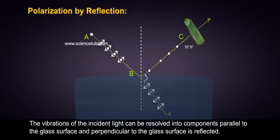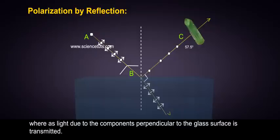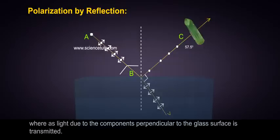The vibrations of the incident light can be resolved into components parallel to the glass surface and perpendicular to the glass surface. Light parallel to the glass surface is reflected whereas light due to components perpendicular to the glass surface is transmitted.